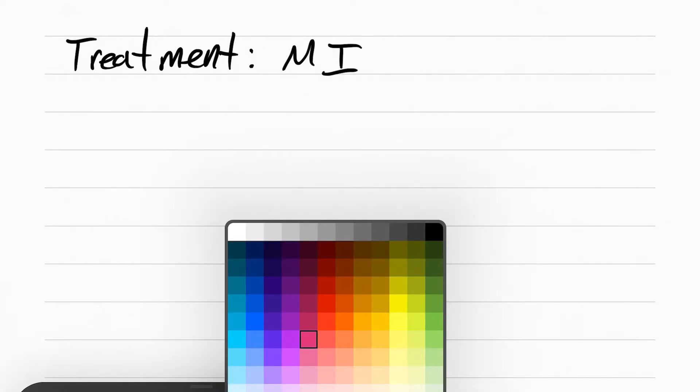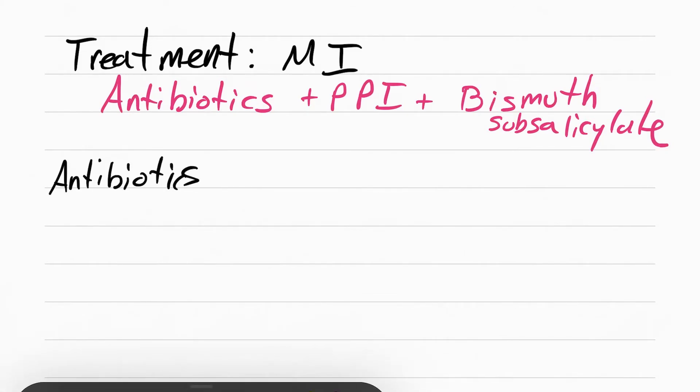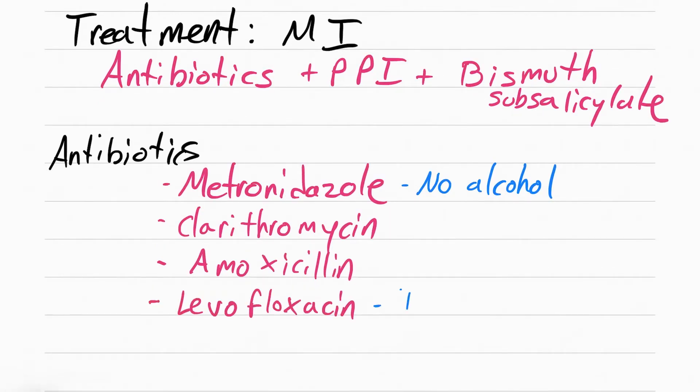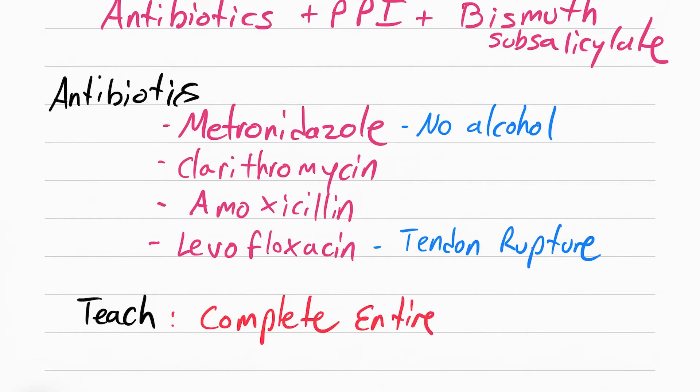Now we're moving on to medical interventions. What medications can be given for a patient with peptic ulcer? It's going to be a combination of meds: multiple antibiotics, PPIs, and bismuth subsalicylate. Let's start with antibiotics. They're going to give multiple different antibiotics. This includes metronidazole, which you should teach the patient not to drink any alcohol. Clarithromycin, amoxicillin, or levofloxacin, which has a small chance of causing tendon rupture or tendonitis. You want to teach the patient on antibiotics to make sure they complete the entire course of antibiotics, even if they feel better. If the patient stops them early, it can cause the bacteria to build resistance to the antibiotics.